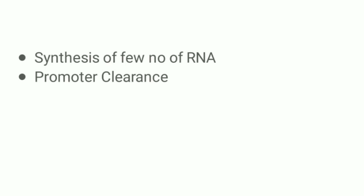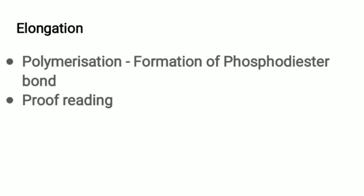A few base pairs are synthesized, and then the RNA polymerase moves from the promoter region to the actual region that needs to be transcribed — the promoter becomes free of RNA polymerase. This is promoter clearance.